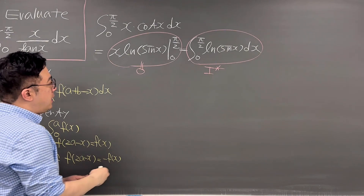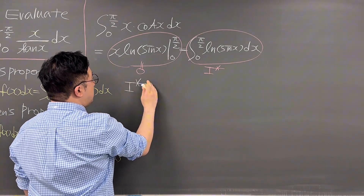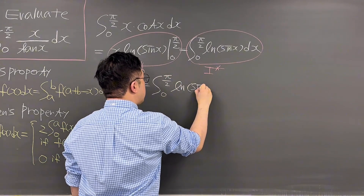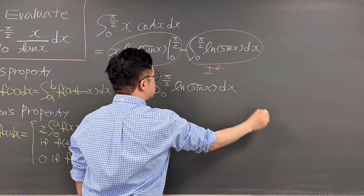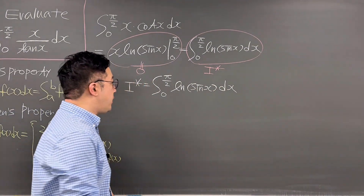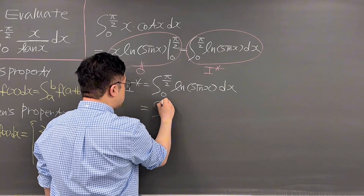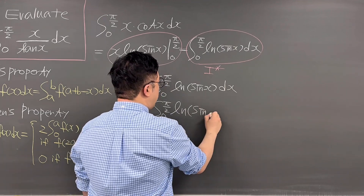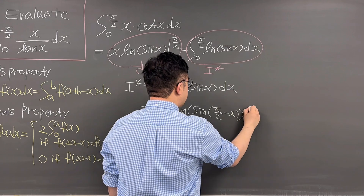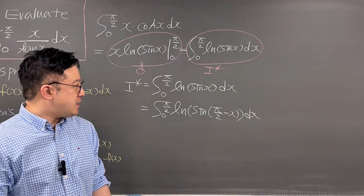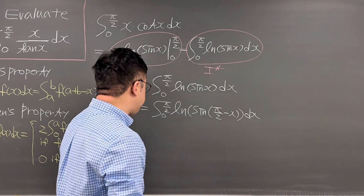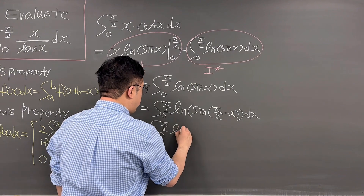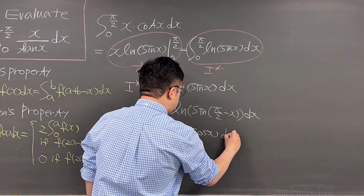So I star is equal to the integral from 0 to pi over 2 of ln of sine x dx. Let's use King's property: this is the same as the integral from 0 to pi over 2 of ln of sine(pi over 2 minus x) dx. Since sine(pi/2 - x) equals cosine x, this becomes the integral from 0 to pi over 2 of ln of cosine x dx.